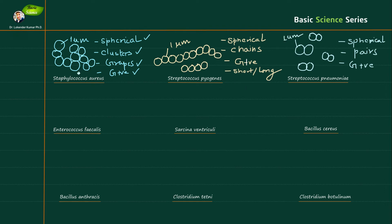You can see that spherical cells can appear in different organizational arrangements. For Staphylococcus aureus you get spherical cells in clusters. For Streptococcus pyogenes you get spherical cells in chains. And for Streptococcus pneumoniae you get spherical cells in pairs. Understanding this arrangement is an important part of the description for identifying these organisms.